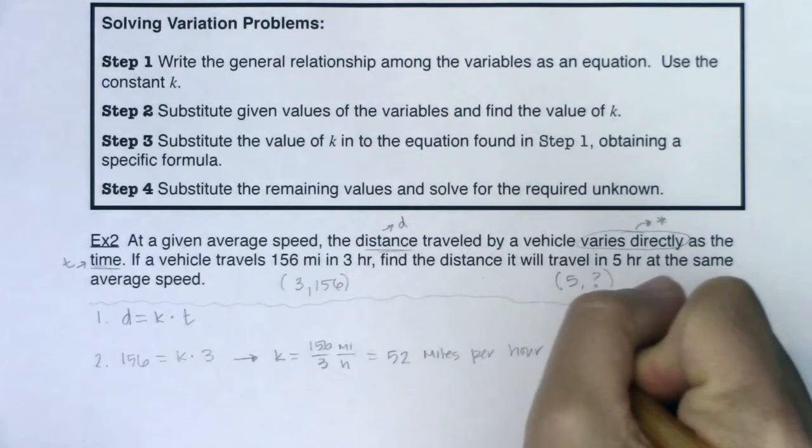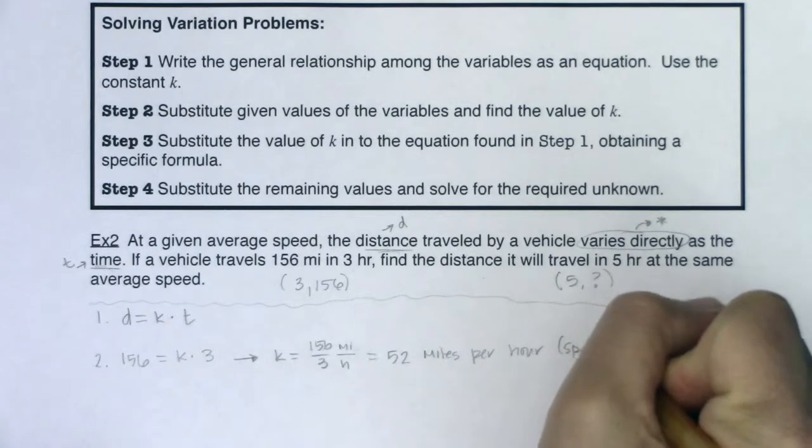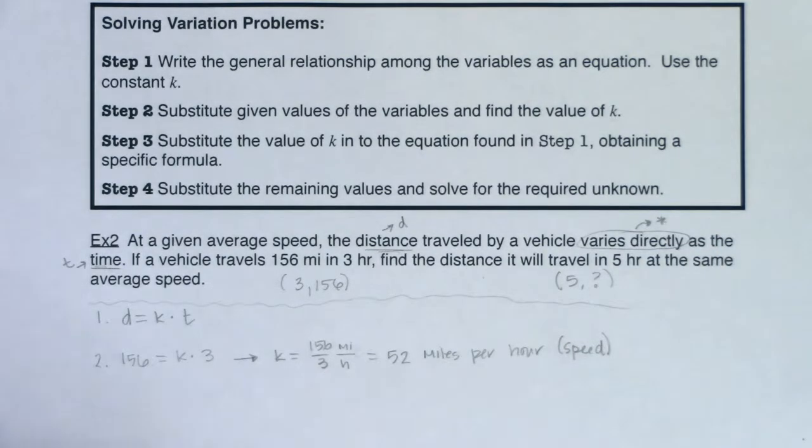Right, it's speed. That's what this is, and we've seen even in this class an application of this before. We know distance is equal to rate times time. We just didn't call it direct variation back when we were taking a look at it.